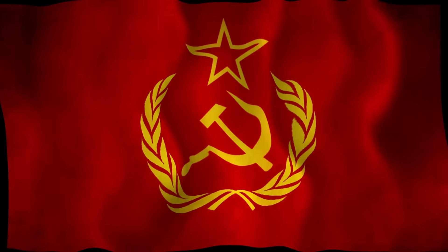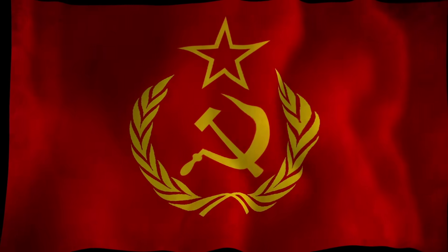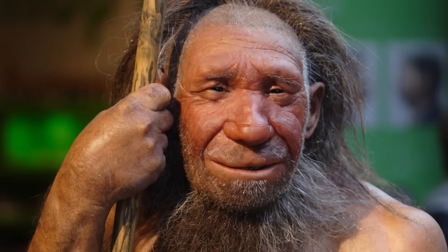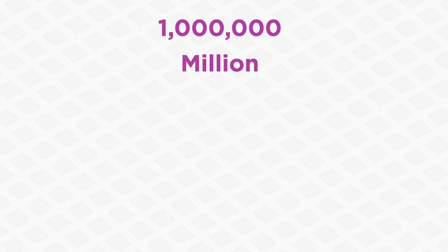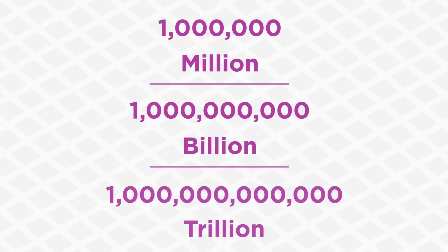1 million seconds ago was less than 2 weeks ago. 1 billion seconds ago was back when the Soviet Union still existed. And 1 trillion seconds ago, the Neanderthals had only recently gone extinct. Each increase in the order of magnitude from 1 million to 1 billion and 1 trillion dramatically increases the scale of the number that you're talking about. And they just keep getting bigger and bigger after you hit the trillions.